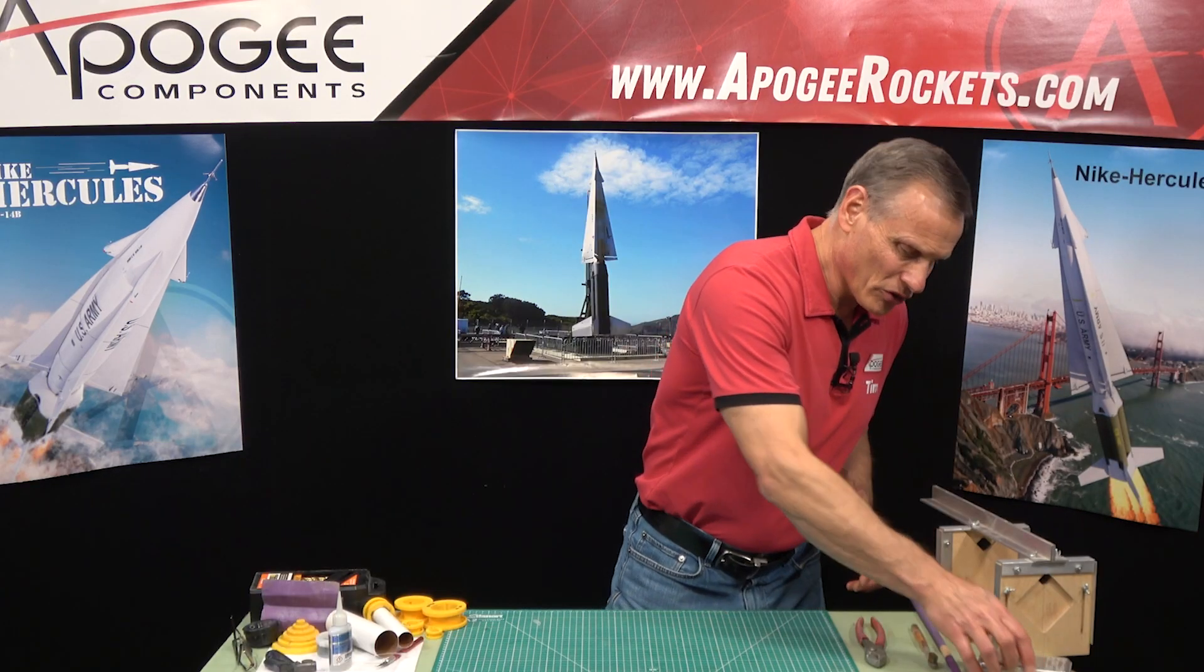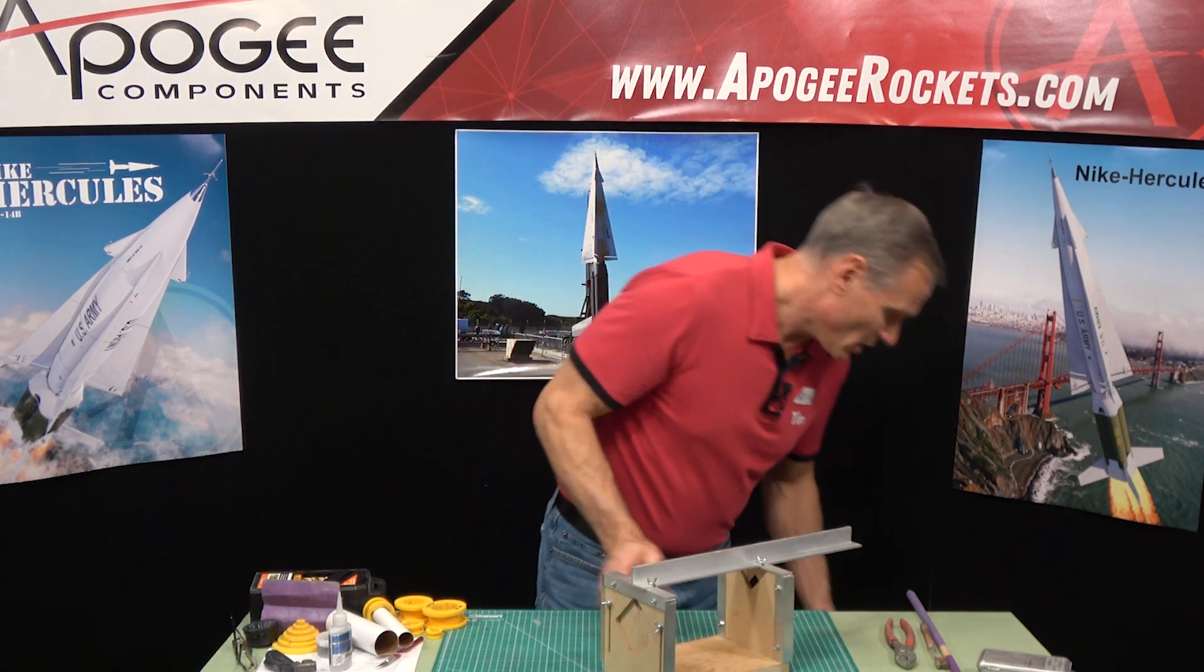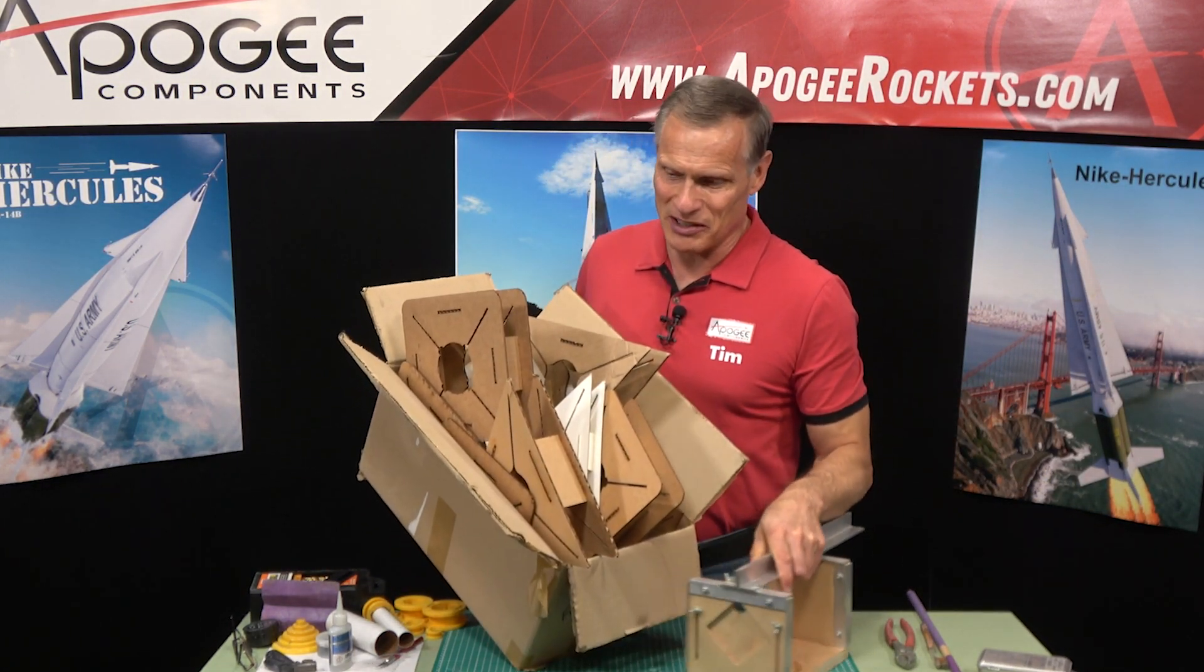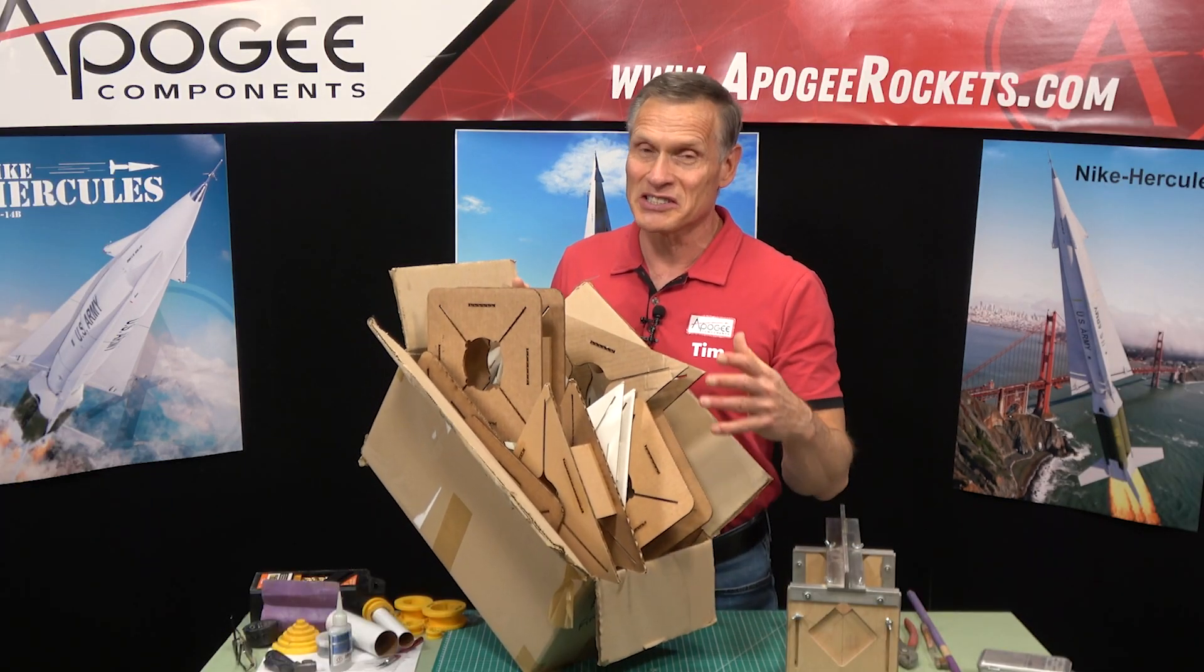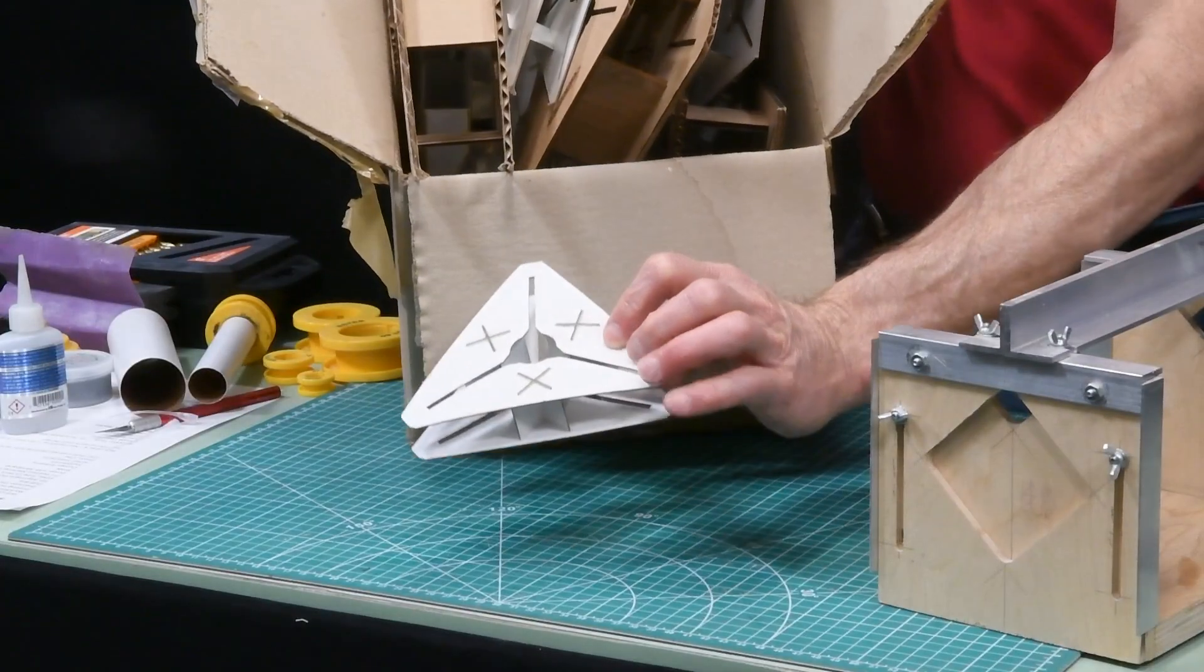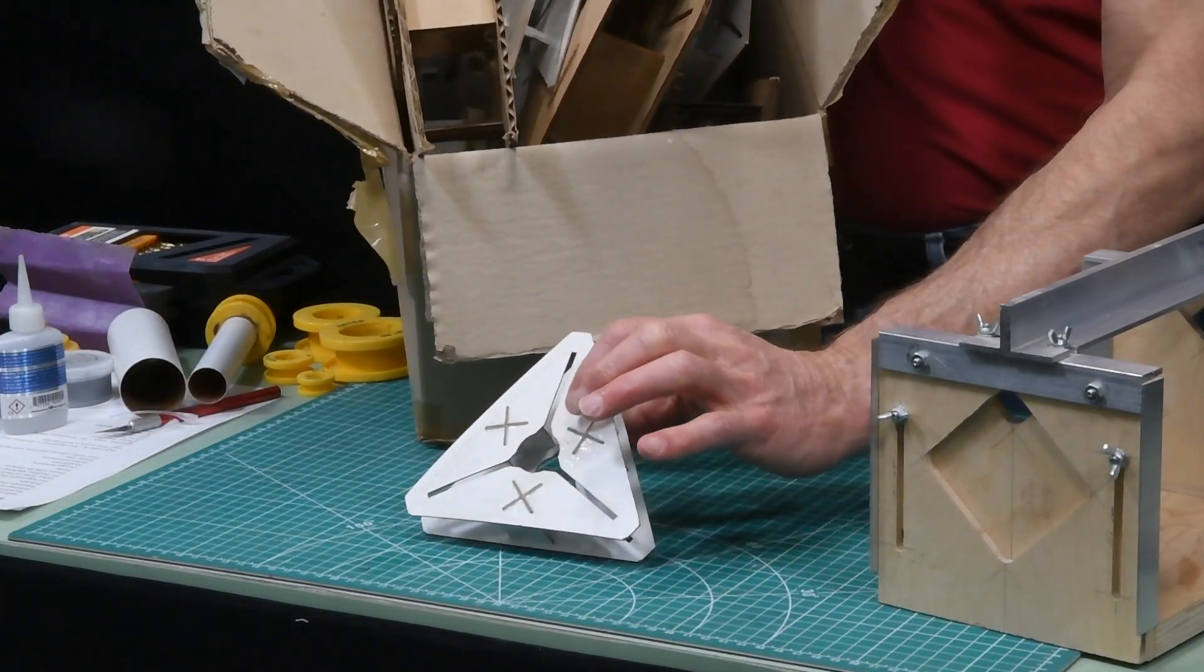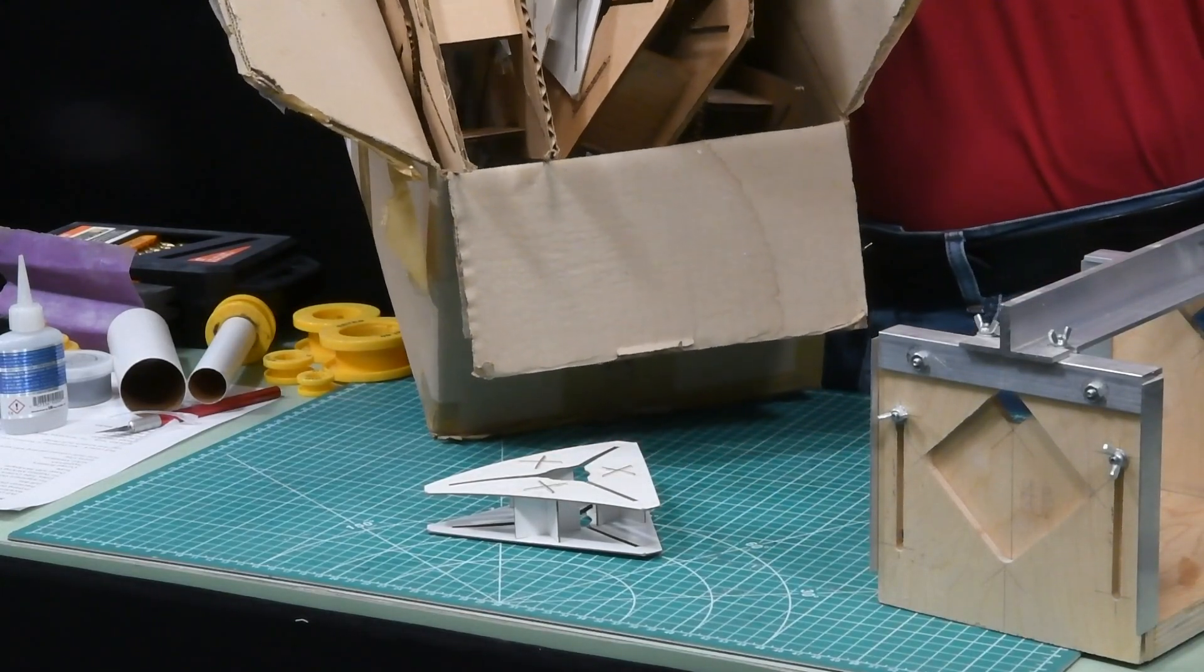Then also in skill level three you're going to need a way to align fins and there's several different tools. This is the R box of fin alignment guides. We sell these here at Apogee and I really love these things and that's why we just save them. We just throw them in a box and then you just pull out and find the size you need.